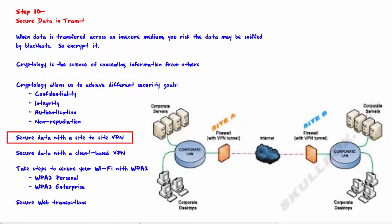Secure data with a site-to-site VPN. A site-to-site VPN allows two networks to communicate securely over the public internet. Suppose a company has an office in New York and an office in Los Angeles. A security appliance is configured at each end, and all data going between the offices must pass through the security appliance before it reaches the internet. Therefore, any user communicating with the other office will have their data automatically encrypted for transfer.